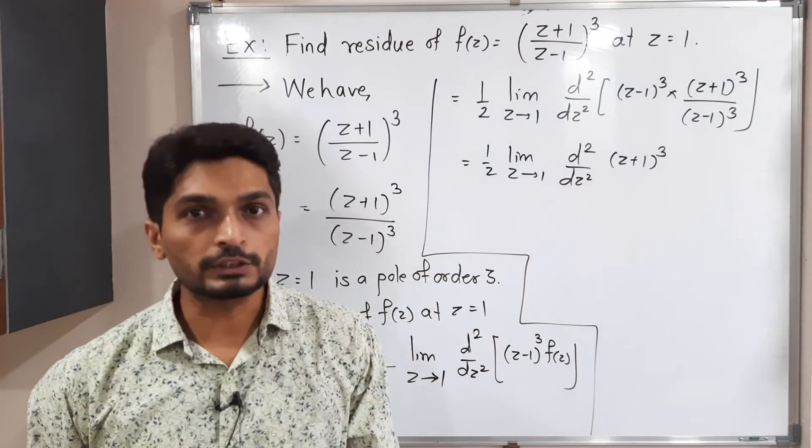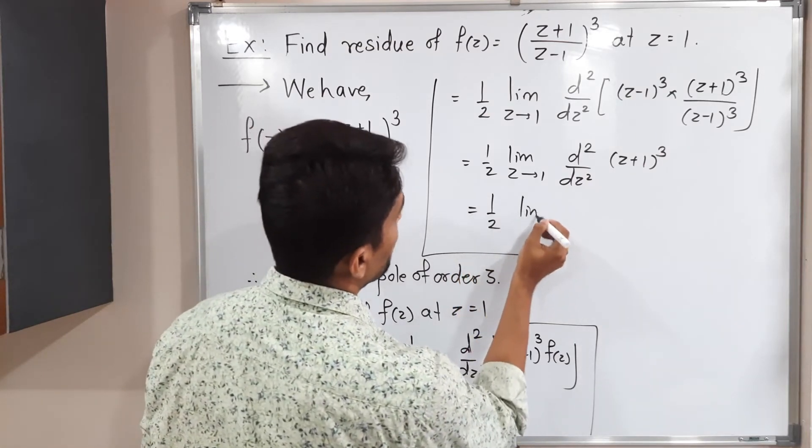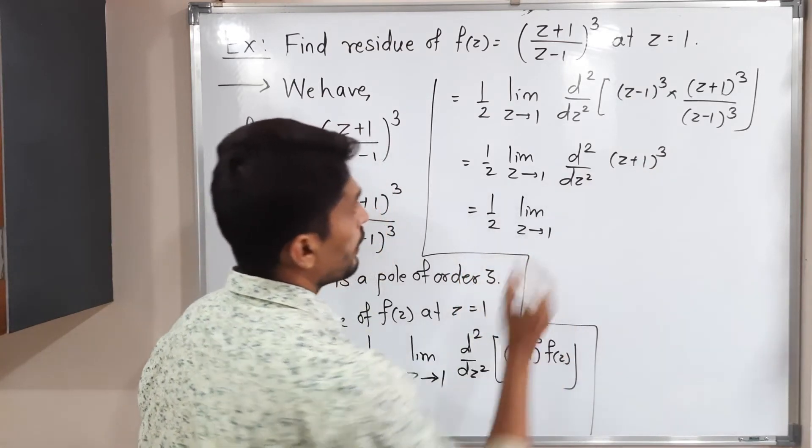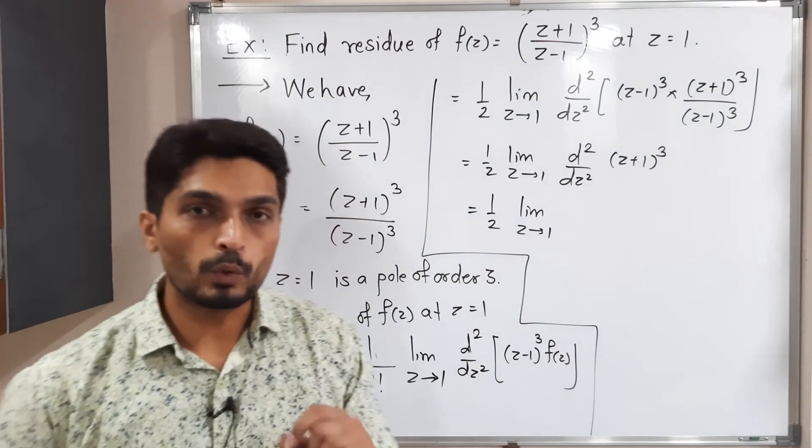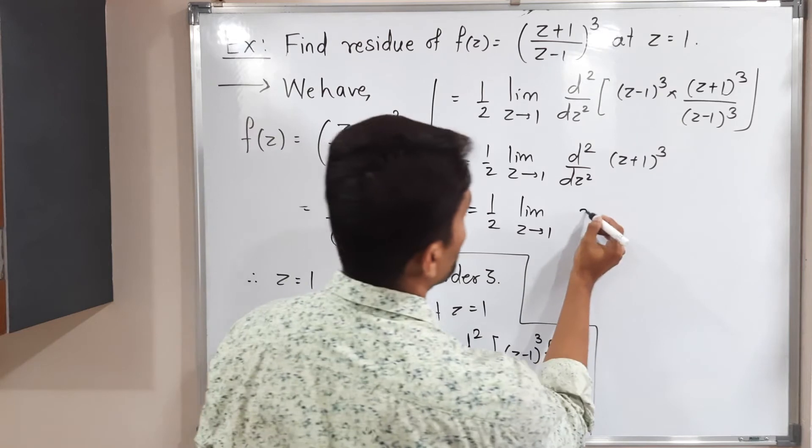So we have to take its double derivative. We will find first derivative, after that I will go for second derivative. So this is equal to 1 by 2, limit z tends to 1. What is its derivative? What is the derivative of z cube? 3z square.